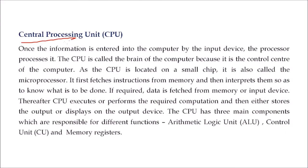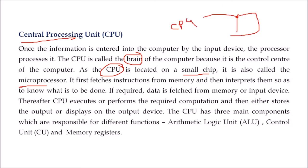Then the central processing unit — CPU — is the brain of your computer. The CPU is located on a small chip, also called a microprocessor. It fetches instructions from memory, understands what needs to be done, fetches required data from memory, executes computation or operations on that data, and then displays the output to the output device. The CPU has three main components performing different actions: the ALU, the control unit, and the memory registers.